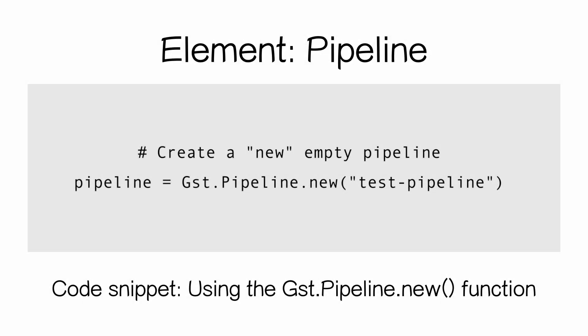Here we're going to create a new pipeline using the pipeline.new() function. It takes one parameter, which is just the name of the pipeline as a string in double quotes.